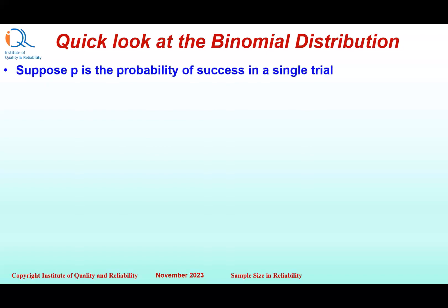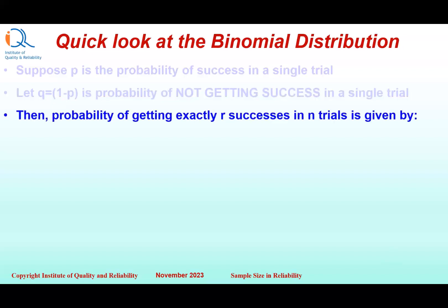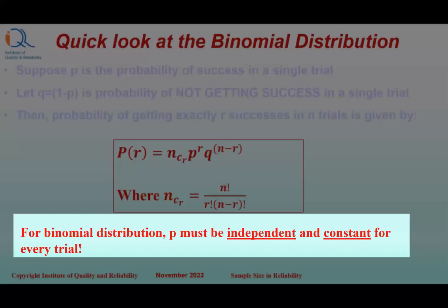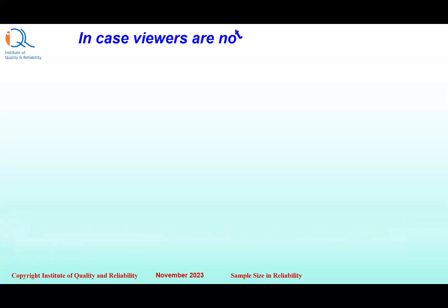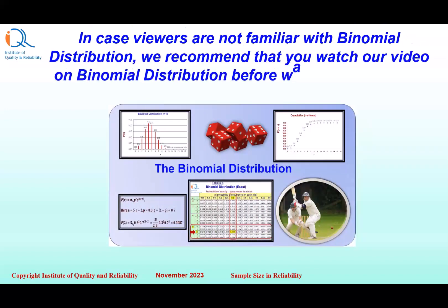Let us understand a little bit of the mathematics of binomial distribution. Suppose P is the probability of success in a single trial, and Q which equals 1 minus P is the probability of not getting success in a single trial. Then the probability of getting R successes in N trials is given by NCR times P raised to R times Q raised to N minus R, where NCR is the combinations of N taken R at a time, which equals factorial N divided by factorial R times factorial N minus R. For binomial distribution, P must be independent and constant for every trial.